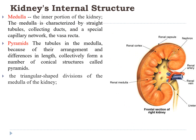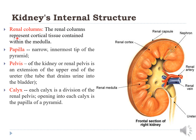The medulla is the inner portion of the kidney. It is characterized by straight tubules, collecting ducts, and a special capillary network called vasa recta. The tubules in the medulla, due to their arrangement and differences in length, collectively form conical structures called pyramids — the triangular-shaped divisions of the medulla. Renal columns represent cortical tissue contained within the medulla, as small spillages of cortical tissue between renal pyramids. The papilla is the narrow innermost tip of each pyramid.